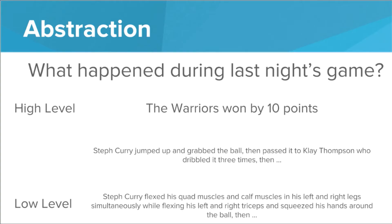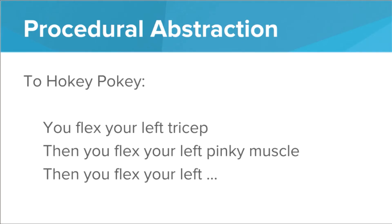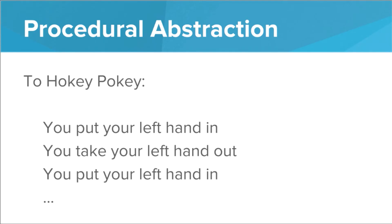How does this relate to computer science? In programming we use a type of abstraction called procedural abstraction, and that is defining the steps of a program without worrying about exactly how each step is going to work under the hood. Imagine we were writing a program to do the Hokey Pokey. We could write the program as: flex your left tricep, then your left pinky muscle — talking about every single muscle you need to flex. But this would make the program so long and full of nonsensical detail. Instead we want to write a high level program like: put your left hand in, take your left hand out, put your left hand in, shake it all about.